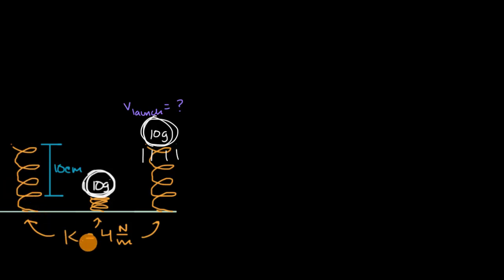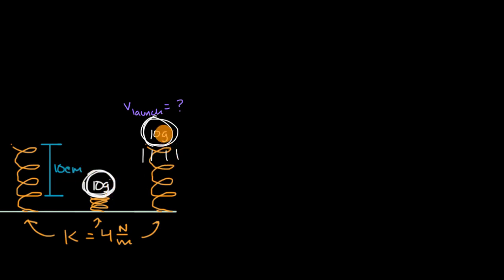We have a spring with a spring constant of four newtons per meter. We take a 10-gram mass, put it on top of the spring, and push down to compress the spring by 10 centimeters. We then let go. What is going to be the magnitude of the velocity of our ball — our 10-gram mass — right as the spring is no longer compressed or stretched, essentially when the ball is being launched?